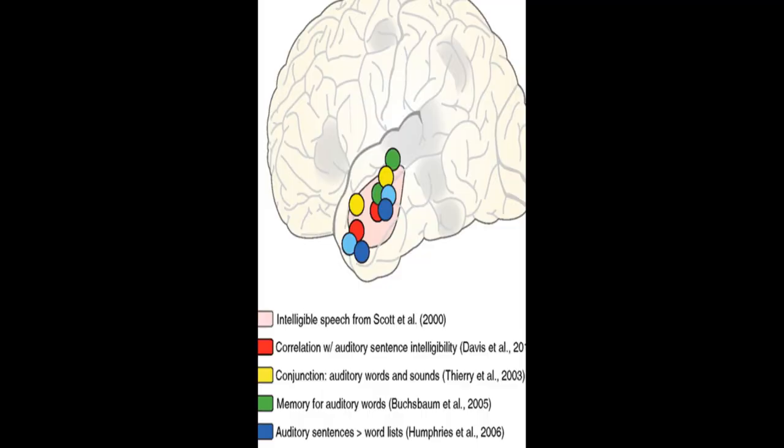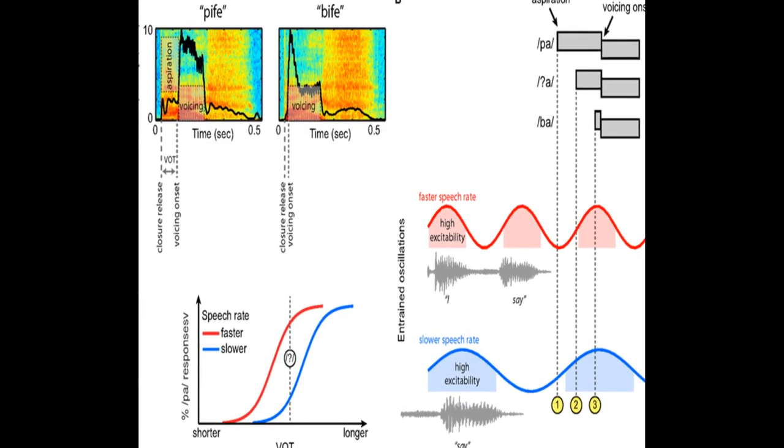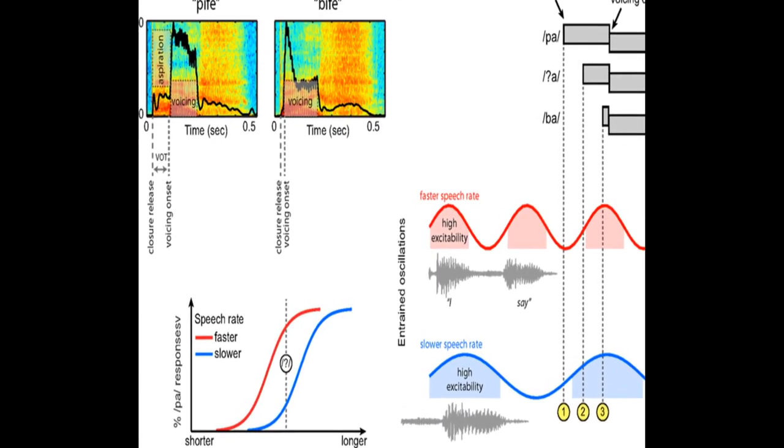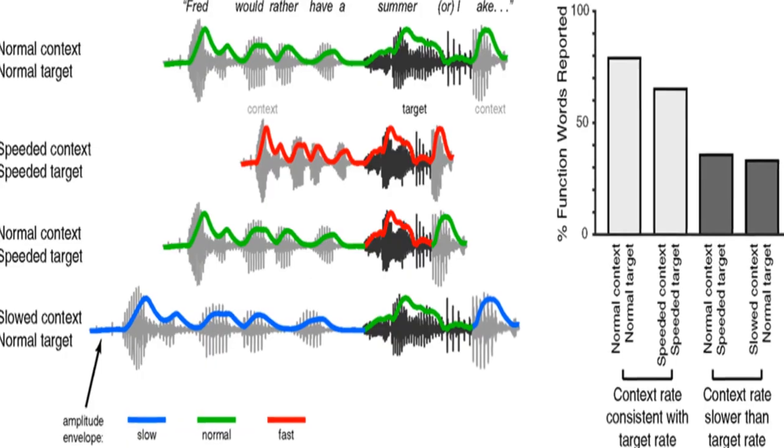The article suggests a framework through which neural entrainment to speech rhythm can explain effects of speech rate on word and segment perception.